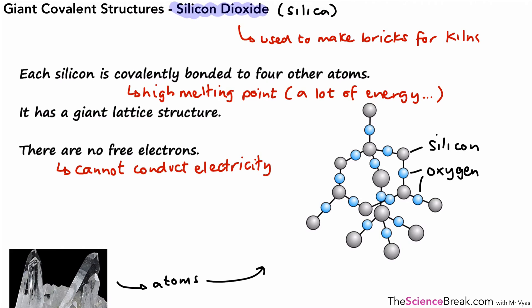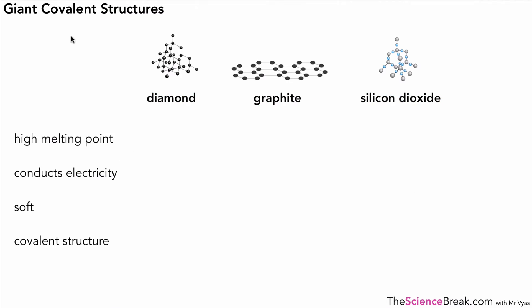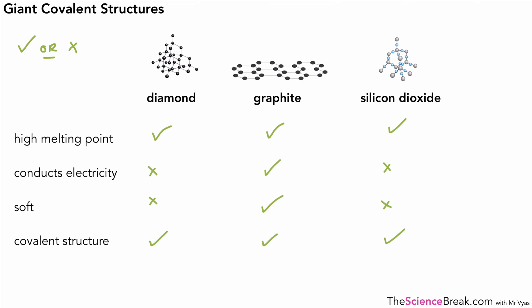Those are the details of the three giant covalent structures. Let's do a quick test: for diamond — high melting point yes, conducts electricity no, soft no, covalent structure yes. For graphite — high melting point yes, conducts electricity yes, soft yes, covalent structure yes. For silicon dioxide — high melting point yes, conducts electricity no, soft no, covalent structure yes. They all have high melting points and are all giant covalent structures.